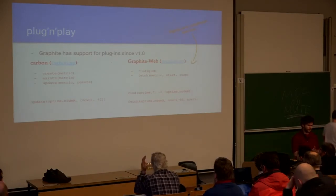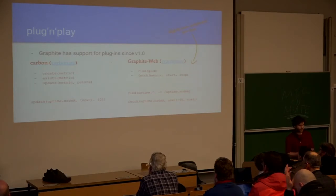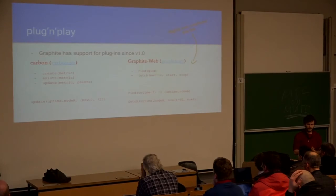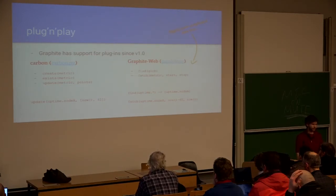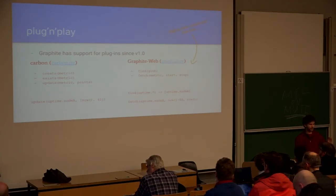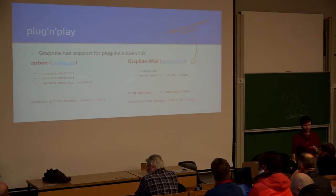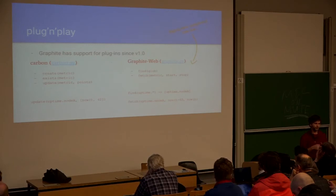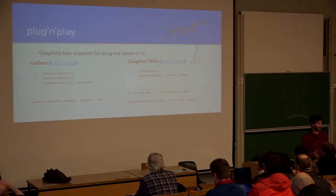How do you change Graphite's database to use Cassandra? The good thing is that Graphite came with a plugin system. On the Carbon side, you need to implement basically three methods: one to check if the metric exists in the database, one to create the metric if it doesn't, and one to add data points. For Graphite-Web, you need to implement two things: first, to find a list of metrics matching a glob pattern — so if the user queries my.metric.wildcard, you return matching metrics — and second, given a metric and a time window, return the data points. Then Graphite takes care of the rest.